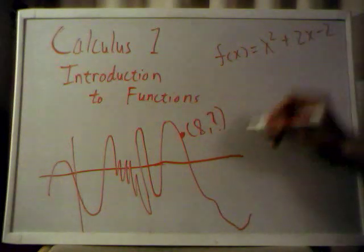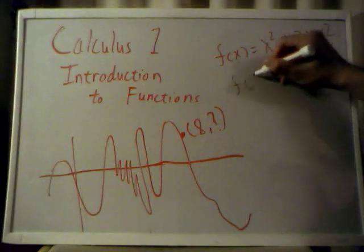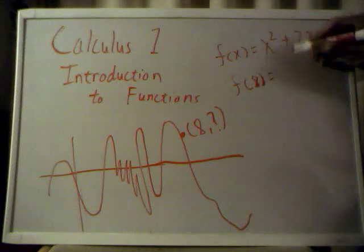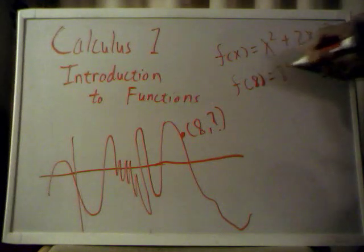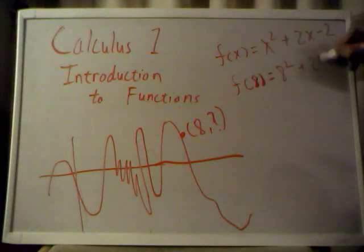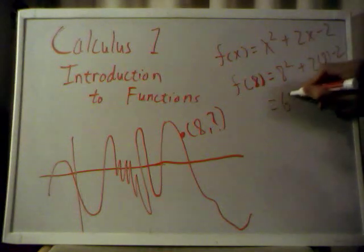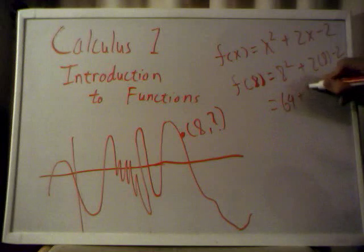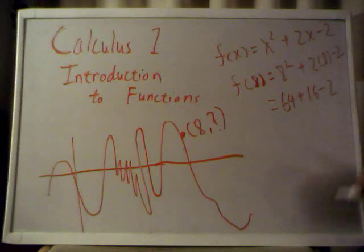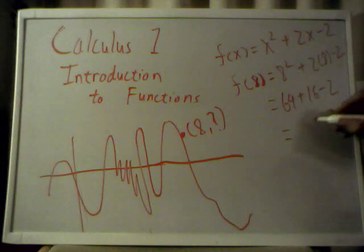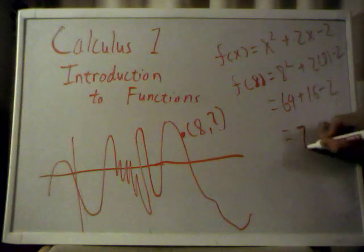So, what do you do? You just simply plug in f of 8 equals 8 squared plus 2 times 8 minus 2, which gives you 64 plus 16 minus 2. Which, if I can add and subtract correctly, that should give you 78.